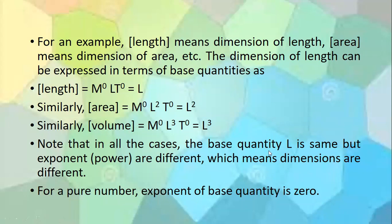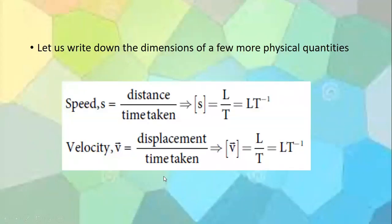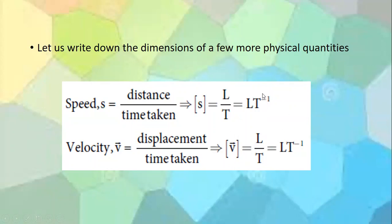For speed, since speed equals distance divided by time, the dimension is L/T, written as LT⁻¹. For velocity, since velocity equals displacement divided by time, and displacement is a measure of length, the dimension is also LT⁻¹. Speed and velocity have the same dimensions.